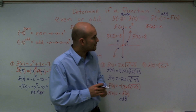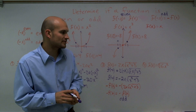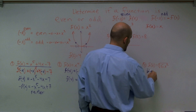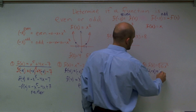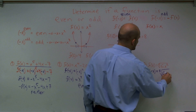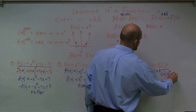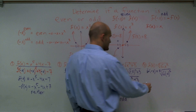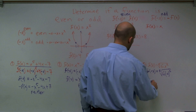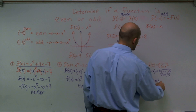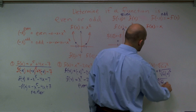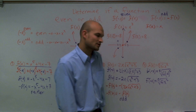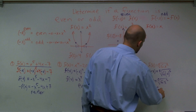For the last problem, I have f of x equals the fifth root of 6x squared. I'll plug in f of negative x: fifth root of 6 times negative x squared. Negative x squared produces a positive x squared. So f of negative x equals the fifth root of 6x squared — the exact same as my original equation. Therefore this function is even.